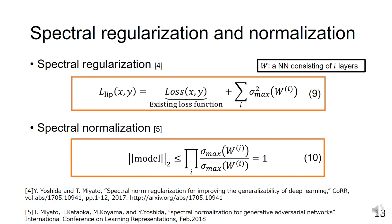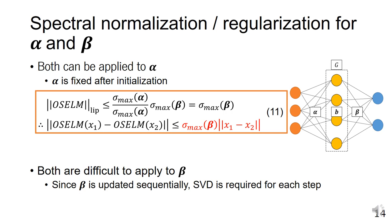The former method adds the sum of the spectral norm of each layer to the loss function, and the effect can be adjusted by parameters. The latter method guarantees that the spectral norm of the entire neural network is suppressed to less than one by dividing it by the product of the maximum singular values. We analyze whether spectral regularization and normalization are feasible to implement in OS-ELM.